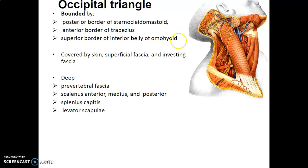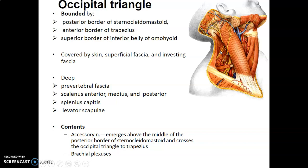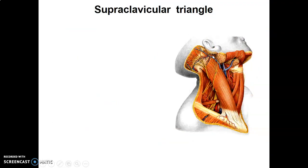The contents of the occipital triangle mainly include the accessory nerve, which emerges from the middle of the posterior border of the sternocleidomastoid and crosses the occipital triangle to reach the trapezius. You also have aspects of the brachial plexus passing through the occipital triangle, as the brachial plexus comes from C5 to T1 from the cervical portion of the spinal cord.